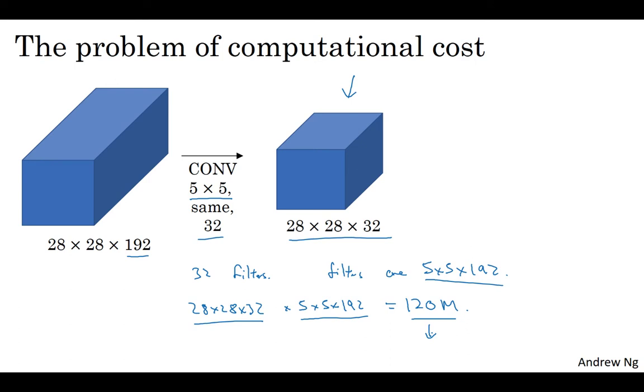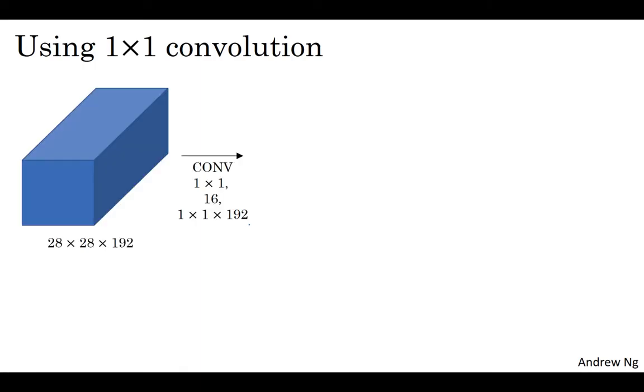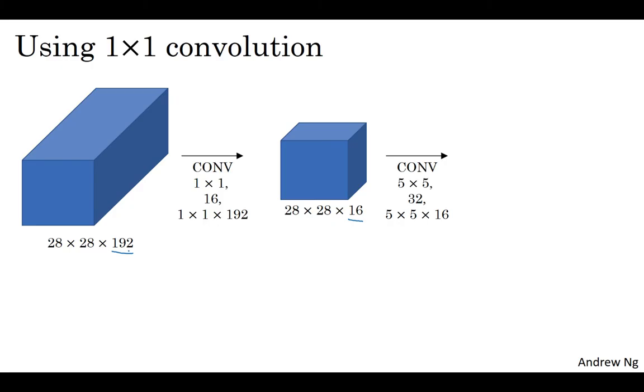Here's an alternative architecture for inputting 28 by 28 by 192 and outputting 28 by 28 by 32. You're going to input the volume, use a 1x1 convolution to reduce the volume to 16 channels instead of 192 channels, and then on this much smaller volume, run your 5x5 convolution to give you your final output. Notice the input and output dimensions are still the same. You input 28 by 28 by 192 and output 28 by 28 by 32, same as the previous slide. But we've taken this huge volume we had on the left and shrunk it to this much smaller intermediate volume, which has only 16 instead of 192 channels.